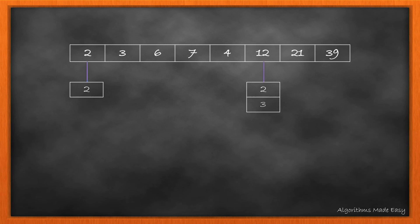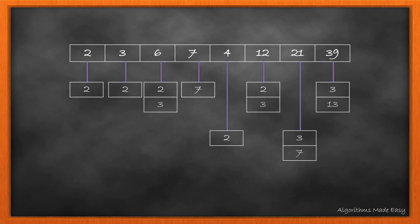Moving to 12, we see it has 2 prime factors, 2 and 3. And 39 has prime factors 3 and 13. So we write the factors for all the numbers. Now what connection can we make out of it?